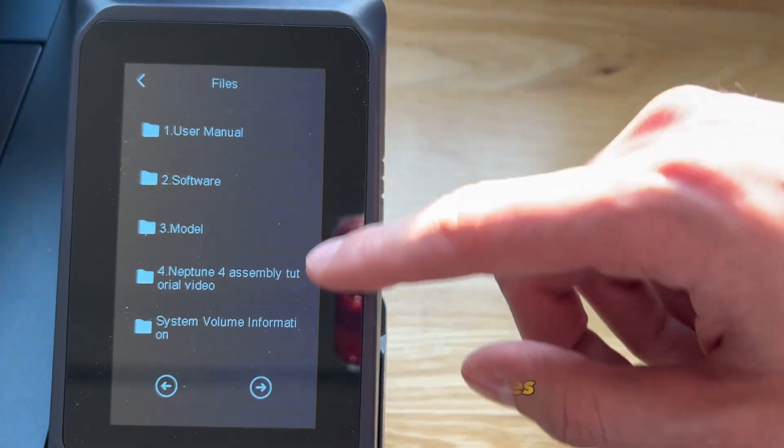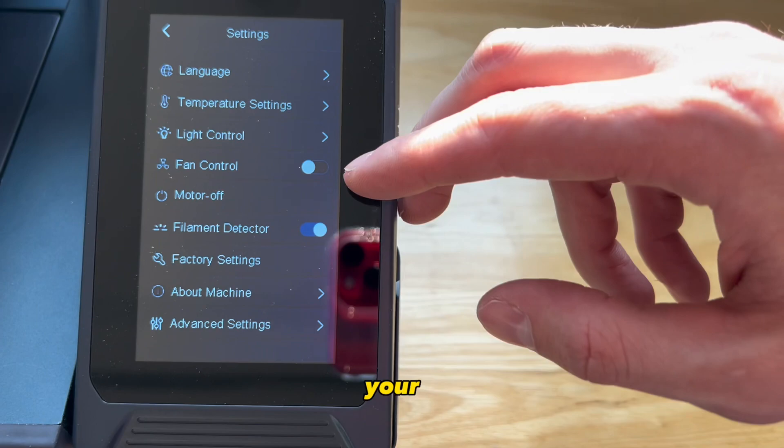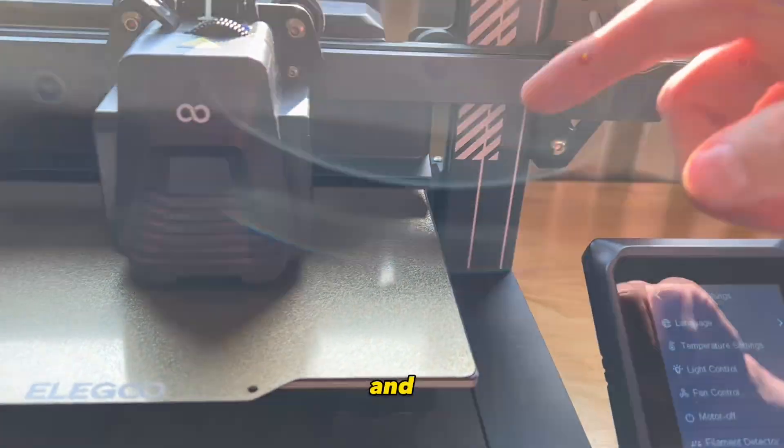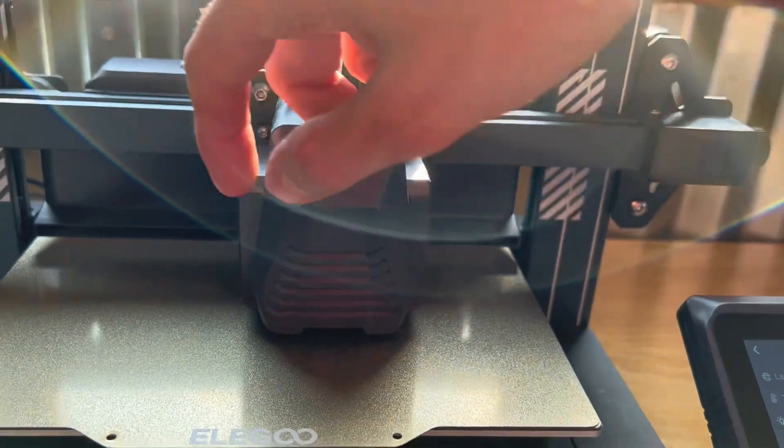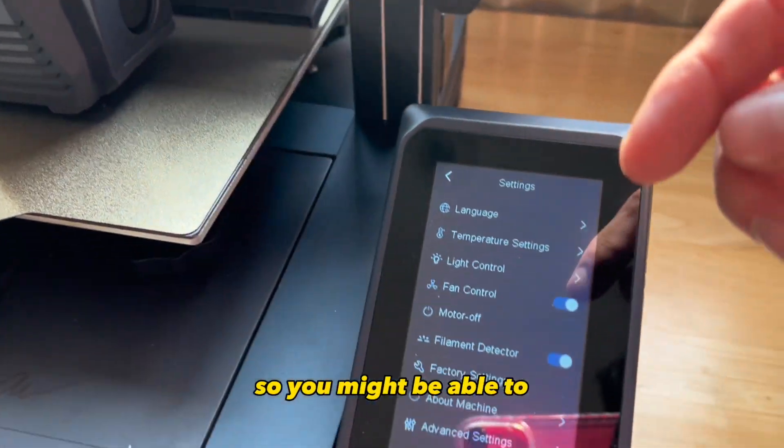You have your print files, it can access folders which is nice. Your settings has fan control, motor off, and your fan. Actually, it's really loud, it kind of sounds like my leaf blower, so you might be able to blow off your lawn with this machine.